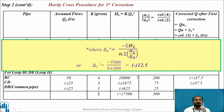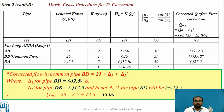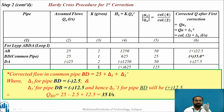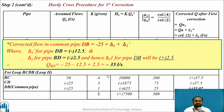For the common pipe B-D, two deltas apply — one from each loop. For BD in loop 1, the error is minus 2.5. For loop 2 it is DB with error minus 12.5; converting to BD direction gives plus 12.5. So the corrected flow for BD becomes 25 minus 2.5 plus 12.5, giving 35 liters per second. For loop 2, the same pipe appears as DB with opposite sign, giving minus 35 liters per second — this serves as a check. These are the corrected flow rates after iteration 1, summarized in a table and shown in the figure.